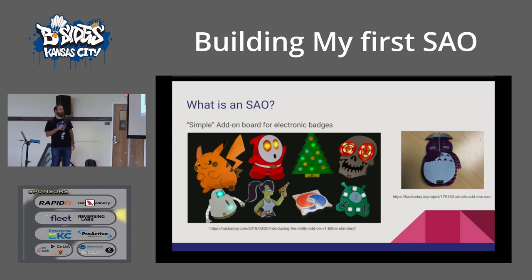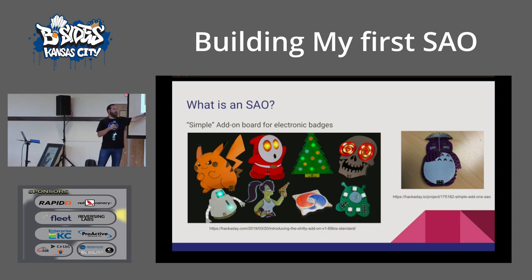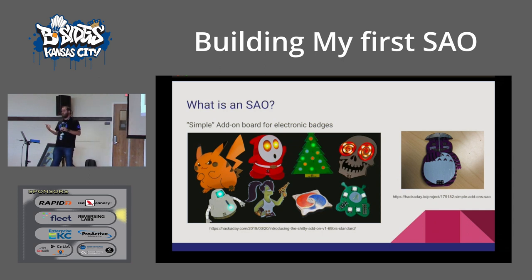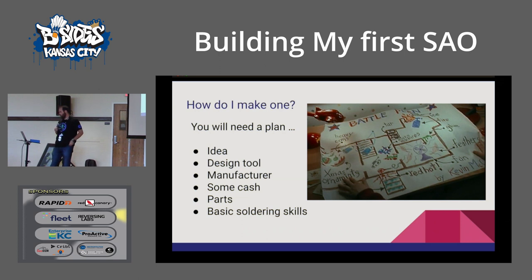You've probably seen these floating around at different conferences. Some have electronics in them — LEDs, resistors, different things — and some don't. I like to call them simple add-ons, but you all know they're actually called shitty add-ons. If you go look at the specification — the one I've been using is out on Hackaday — it's a proposed specification on how to make these interoperable. So if you get one at this conference, you could potentially go to another conference later this year and plug it on your badge and it just works.